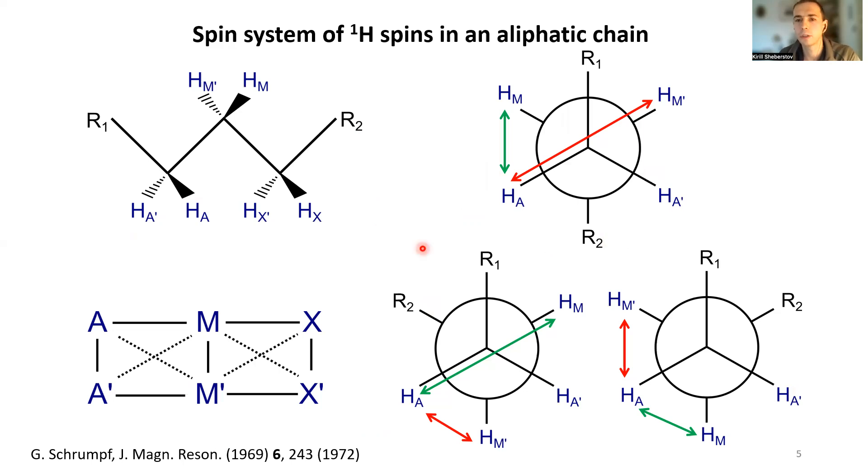In solution there will be three main rotomers, and in each rotomer the vicinal J coupling depends on the angle between interacting spins. Obviously this angle in each conformation will be different, so the J couplings will be different. It can be shown that if the population of these rotomers in solution is not equal, the spins will be magnetically inequivalent.